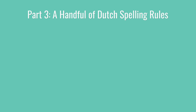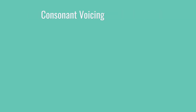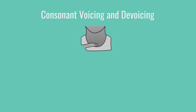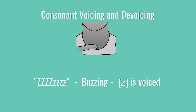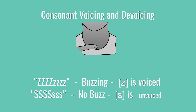So let's get started. Our first topic is consonant voicing and devoicing. Almost every consonant, in English and in Dutch, comes in voiced and unvoiced versions. You can get a feel for this by putting your hand on your throat and saying zzzz. You should feel buzzing in your throat, zzzz. And that buzzing means that z is a voiced consonant. If you do that exact same thing but say s instead, you'll find that there is no buzzing. S is the unvoiced version of z.